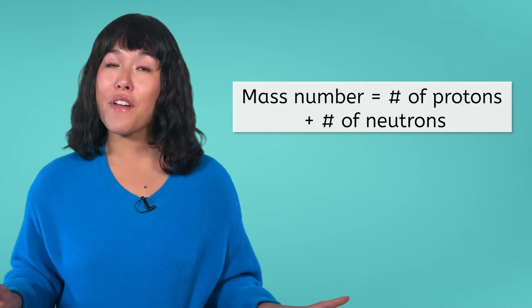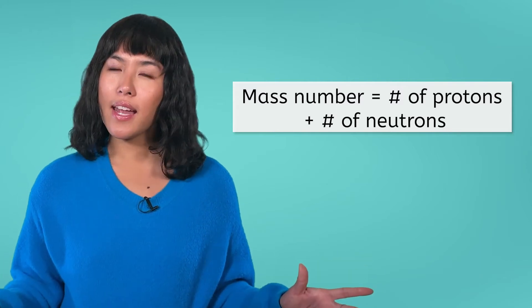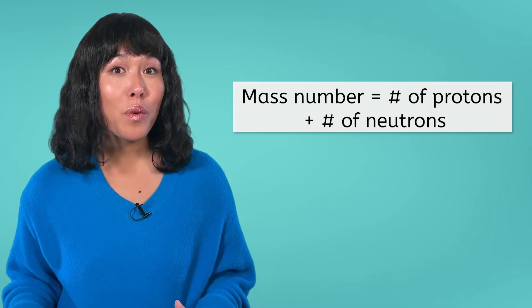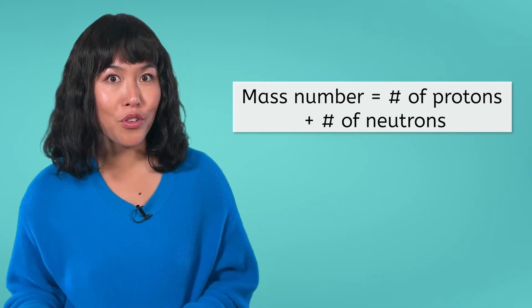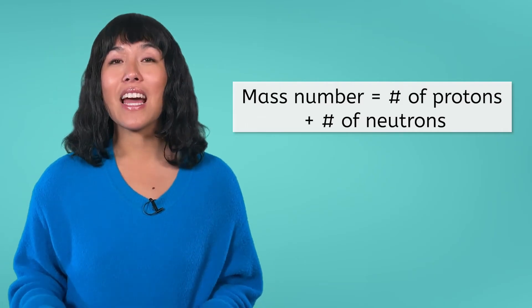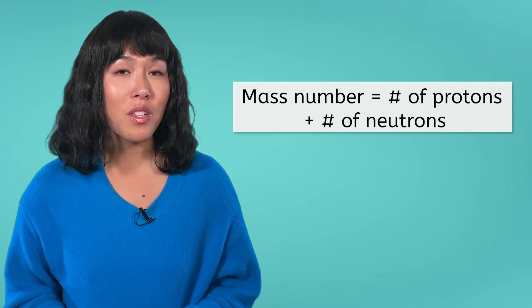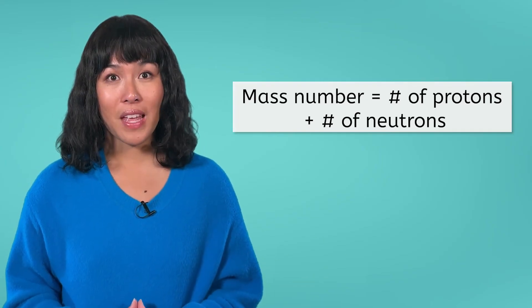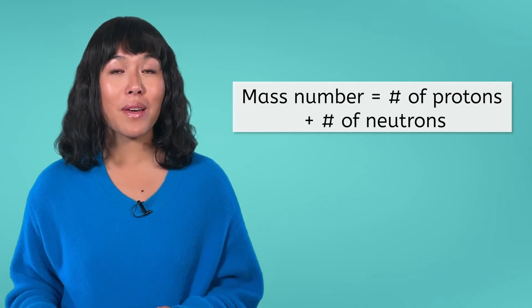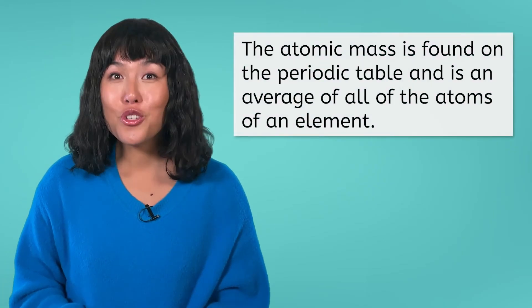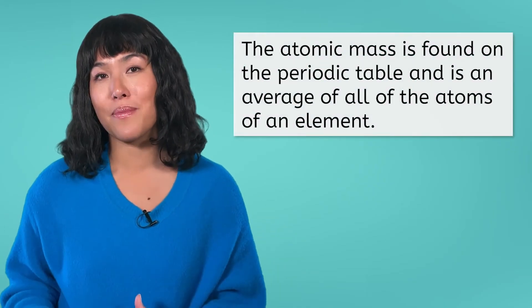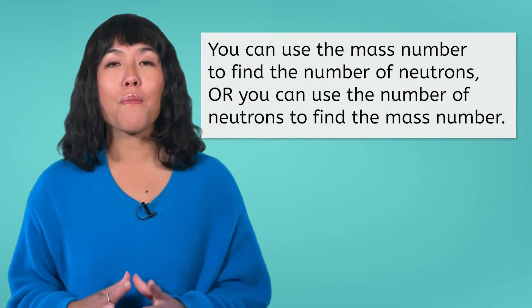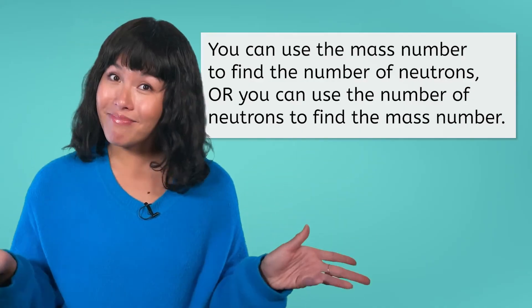The mass number is not found on the periodic table. Atoms of the same element can have a different number of neutrons, meaning they can have a different mass number too, so the variations of this number aren't shown on the periodic table. However, you might see the atomic mass for each element on the periodic table, which is found by averaging the mass of all of the versions of an element together. Since you can't find the mass number on the periodic table, you would need to know the number of neutrons present in an atom to determine it. Conversely, if you already know the mass number, you can determine the number of neutrons in the atom.